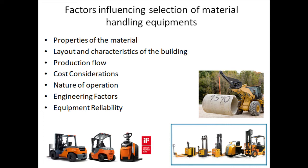Regarding production flow: if the flow is fairly constant between two fixed positions, fixed equipment such as conveyors or chutes can be successfully used. If the flow is not constant and the direction changes occasionally because several products are being produced simultaneously, movement equipment such as trucks would be preferred. Cost is a very important factor — several cost elements including initial investment, operating, and maintenance costs need to be considered. By calculating and comparing the total cost for each item of equipment, a more rational decision can be reached.